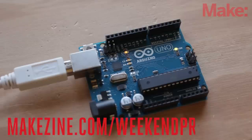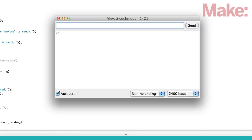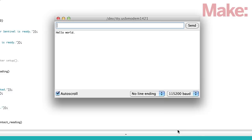If you haven't already, visit the project page for links to the Arduino software, appropriate libraries, and example code. Upload the code, open the serial monitor, and set the baud rate to 115200. You should see Hello World appear in the serial monitor window.